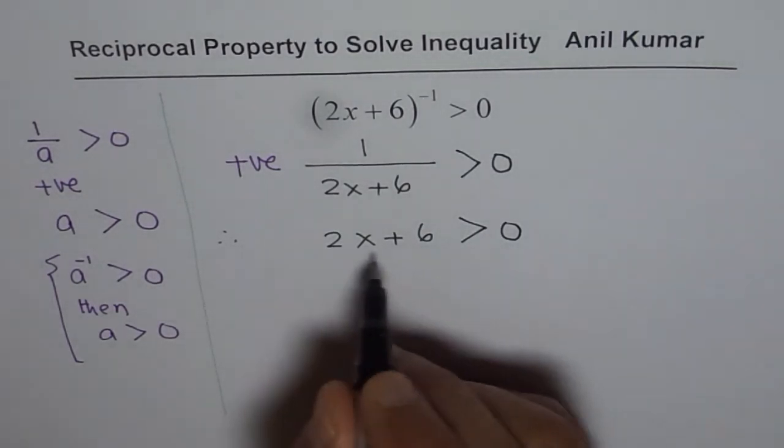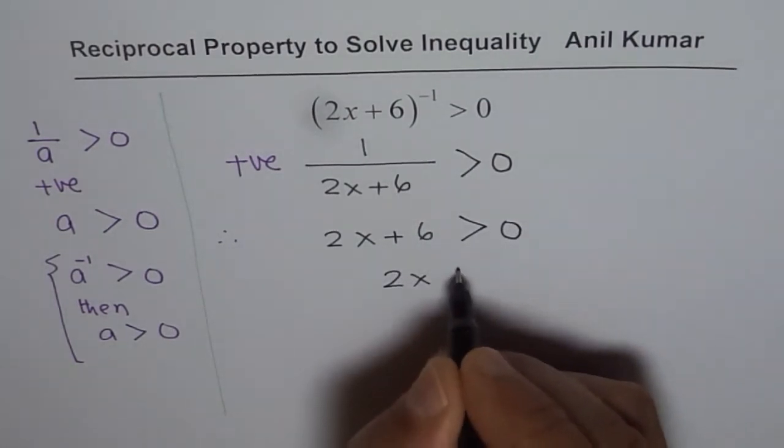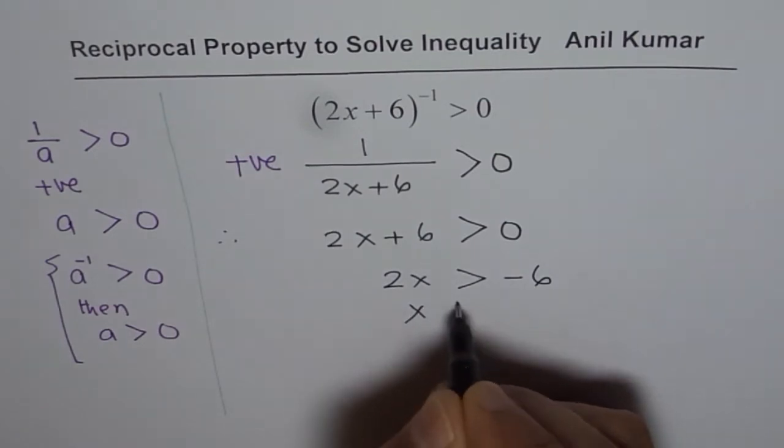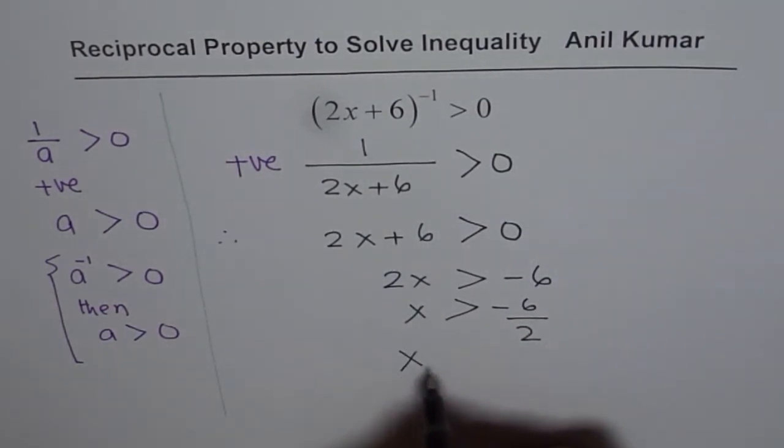Now it becomes a linear inequality we can easily solve by taking 6 on the other side and then dividing by 2. So we have minus 6 divided by 2, or x is greater than minus 3.